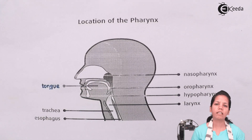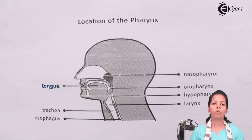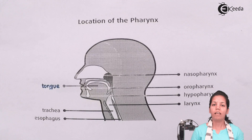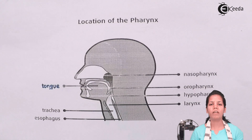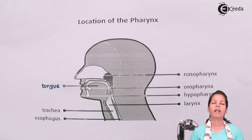Students, in this part of the chapter we studied about pharynx — its location, its function, and its association with the respiratory tract. I hope we are very clear with this concept. Thank you.